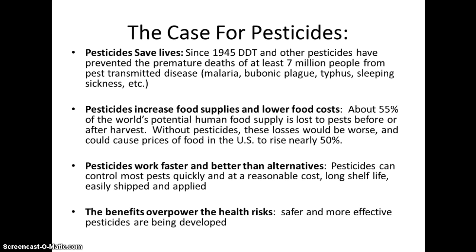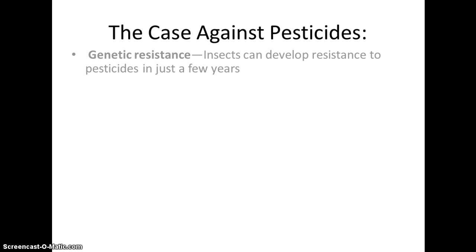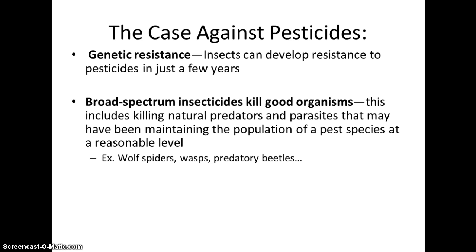Of course, there are downsides. Over time, insects can develop resistance to pesticides through natural selection. The broad spectrum insecticides that kill all insects also kill beneficial organisms. This can affect the food chain and kill natural predators, which may cause another pest population to explode.